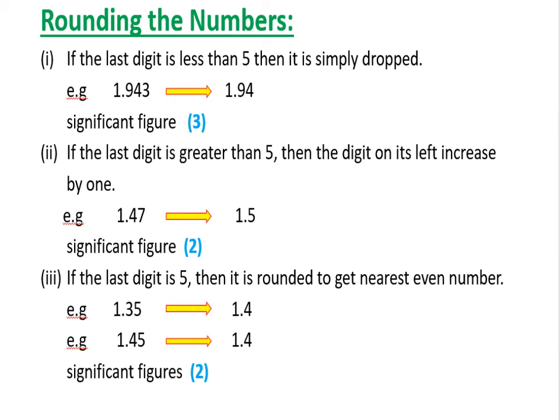First rounding rule: if the last digit is less than 5, it is simply dropped. For example, 1.943 — since 3 is less than 5, we drop it and the result is 1.94.